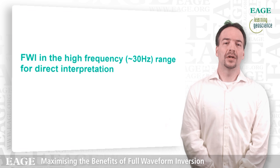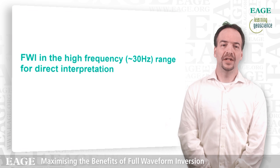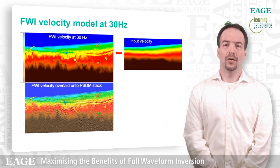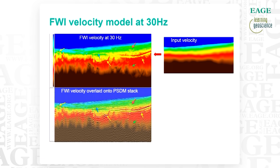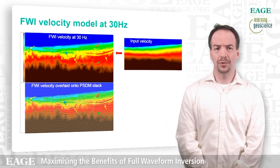Now let's have a look at what happens when we push the high frequencies into the velocity model and why we believe this is a great tool for direct interpretation. On the right you can see just a reminder of the input velocity model — very smooth. On the left you see the result of the FWI when we push it to 30 Hz. This is where FWI can really shine — you can see a lot of detail coming through. I left the same arrows as before, and now you can really see, above all on the volcanics, the fantastic definition that FWI has given. When we overlay this image onto the PSDM stack you can see that they match very closely, and this is one of the best QC checks we can do to be sure that FWI has converged into a correct solution.